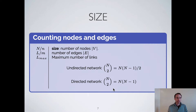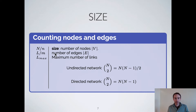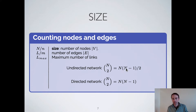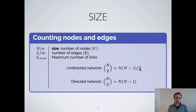The first thing you can do when you get a graph is count the number of nodes and edges. We call the size N (number of nodes), and L is the number of edges. L_max is the maximum number of edges possible: in an undirected network it's N×(N−1)/2, because each node can connect to each other node but since edges are undirected you divide by 2. In a directed network it is simply N×(N−1).